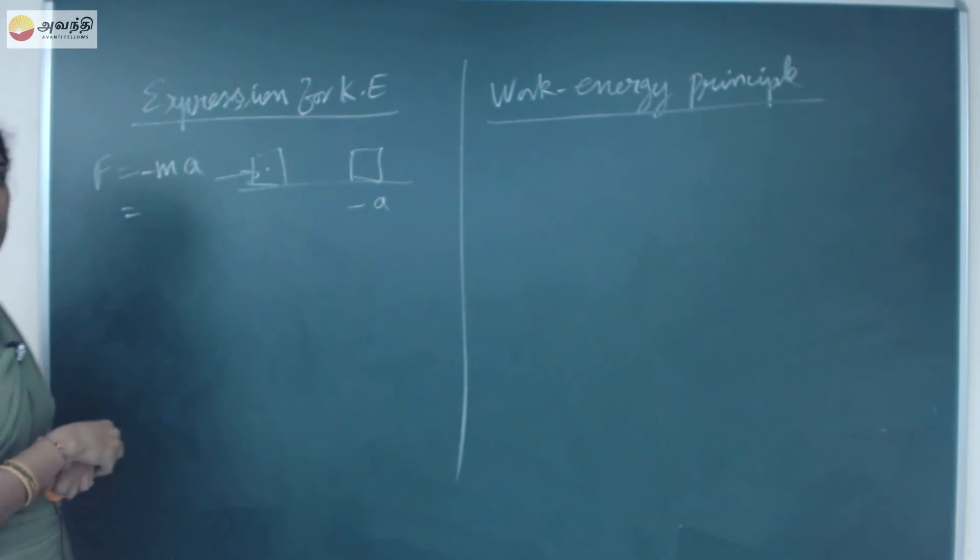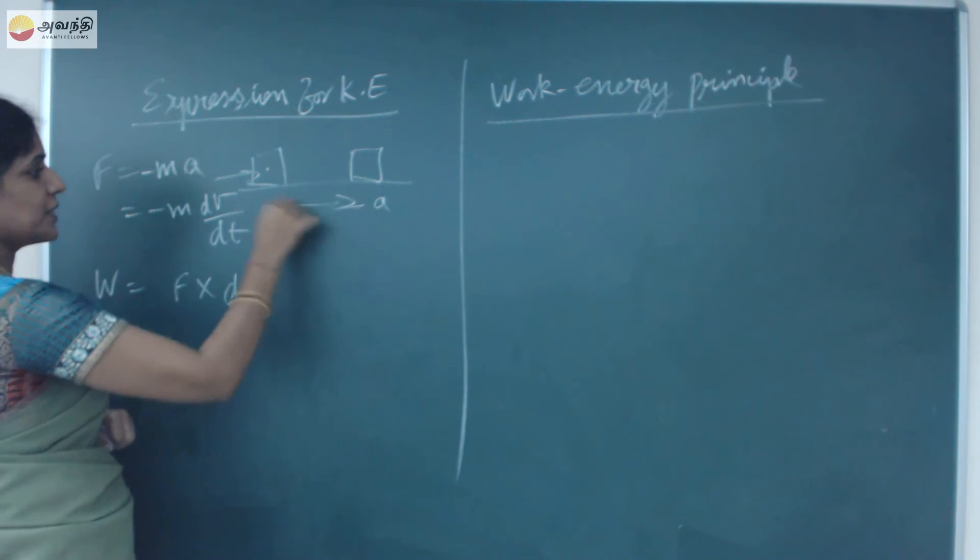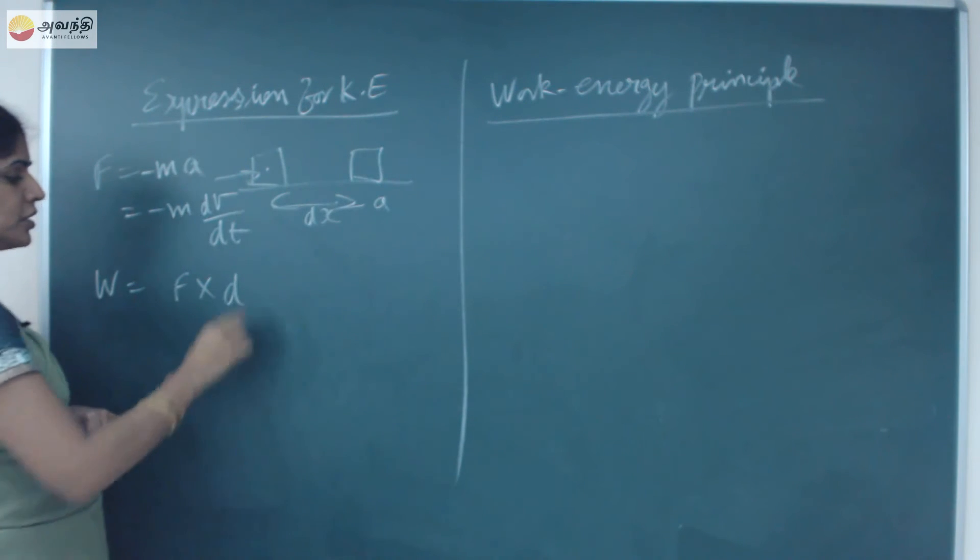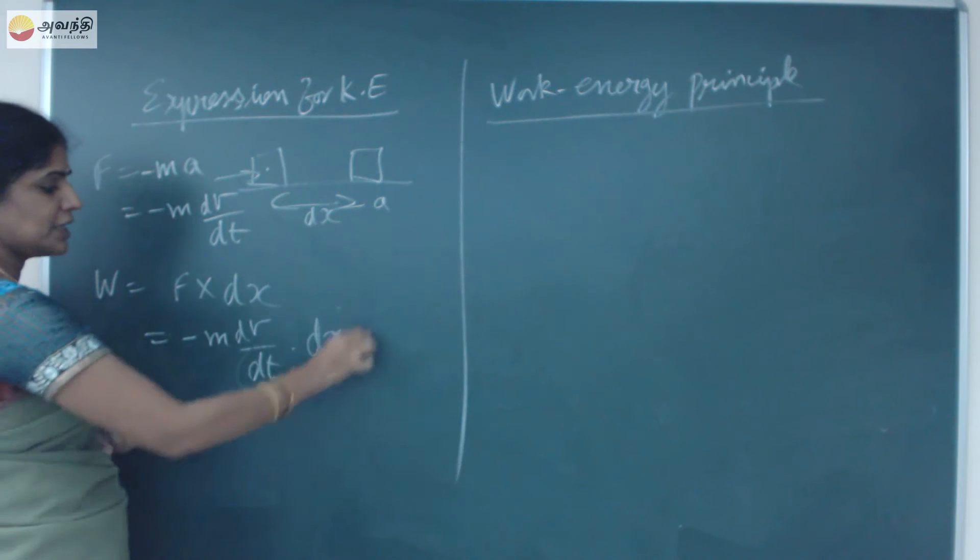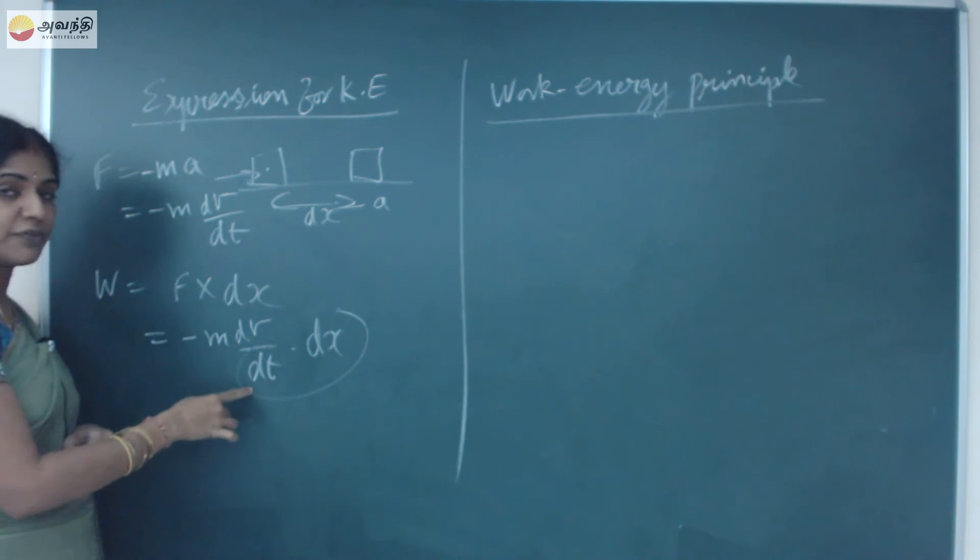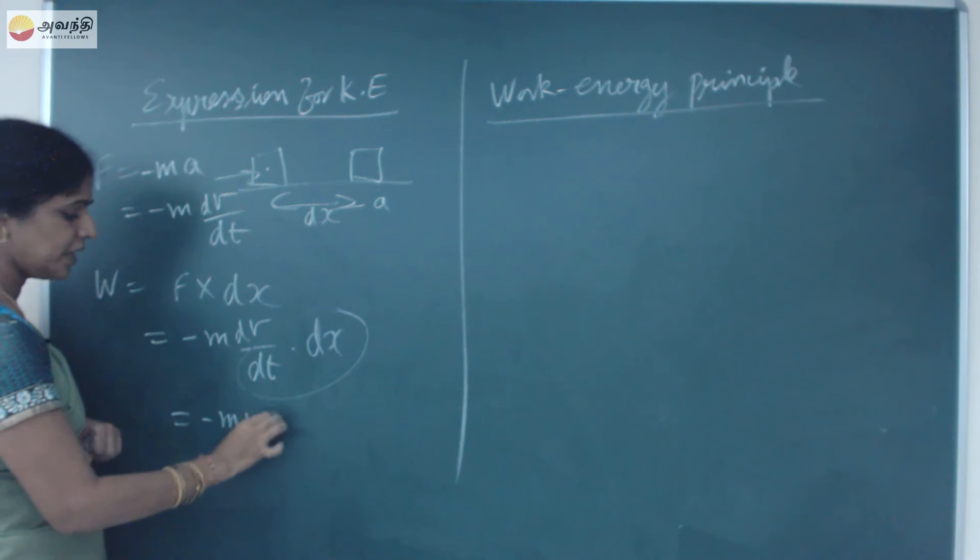If we call it as negative acceleration, we call it as retardation. The force has a retarded force, minus MA. We know that A is equal to rate of change of velocity, minus M dV by dt. Force is equal to M into A. Now work done is equal to force into displacement. Let dx be the displacement of the object because of the force applied. Force into displacement, force is minus M dV by dt into dx. But dx by dt, the rate of change of displacement is velocity. I can write this as minus Mv dV.